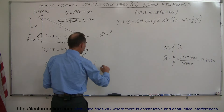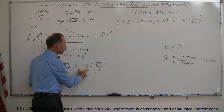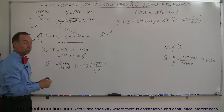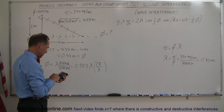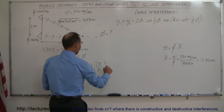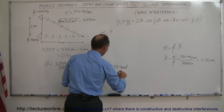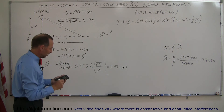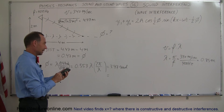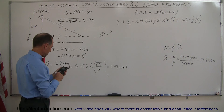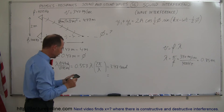We can figure out how many radians that phase difference represents. A full wavelength equals 2π radians, so we multiply 0.553 by 2π to convert the fractional wavelength into radians. That gives us 3.47 radians. Converting to degrees by multiplying by 180 and dividing by π, we get 199 degrees.